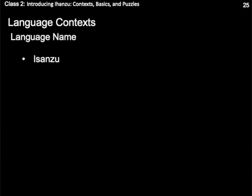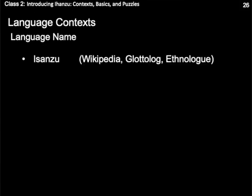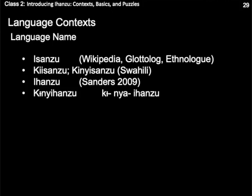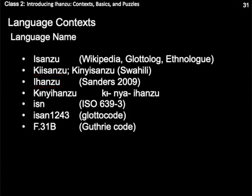Ihanzu is often called Ihanzu, and in fact all of the highest-profile sources for language data use this form. The form ki-sanzu or ki-ni-sanzu is also seen, which is simply the Swahili form of this word. Ihanzu is an English adaptation of how the Ihanzu people refer to their language, which in Ihanzu is called ki-nihanzu, broken down into the noun class prefix, a partly lexicalized morpheme, and the language name. It is this English form we will use to refer to the language. Ihanzu can also be described using these unique identifiers: the ISO 639-3 code ISN, the Glottocode, or the geographically-based Guthrie code, which is used by Bantuists.